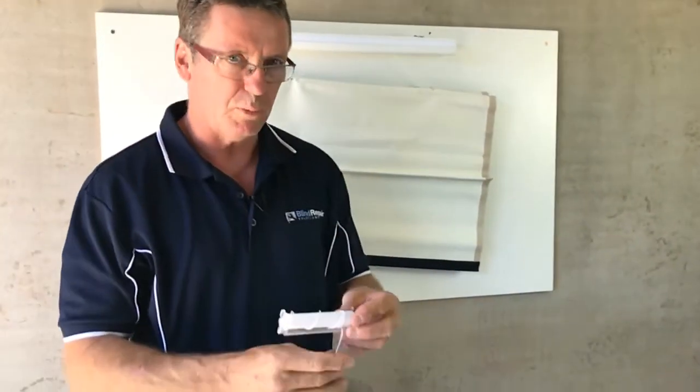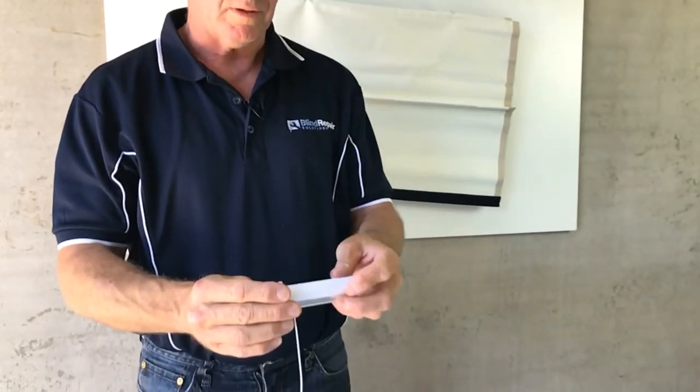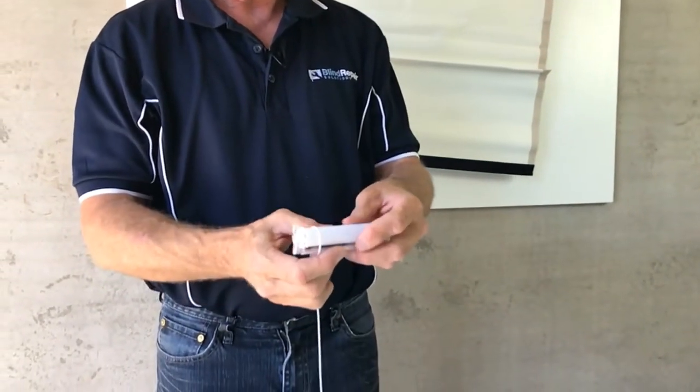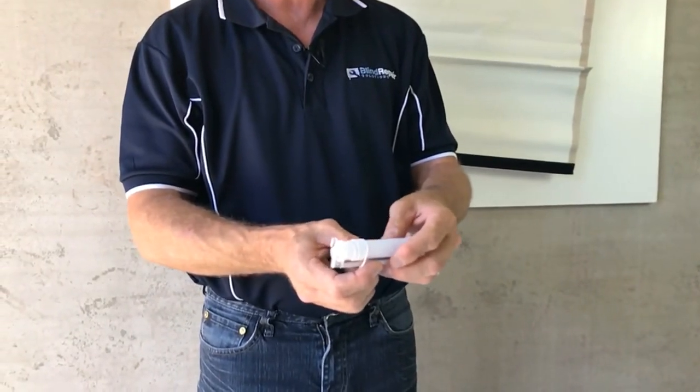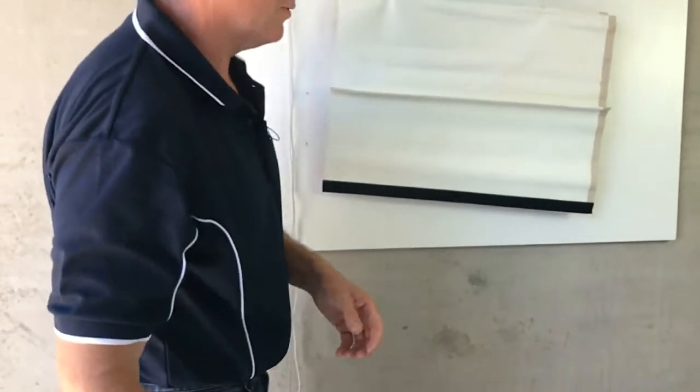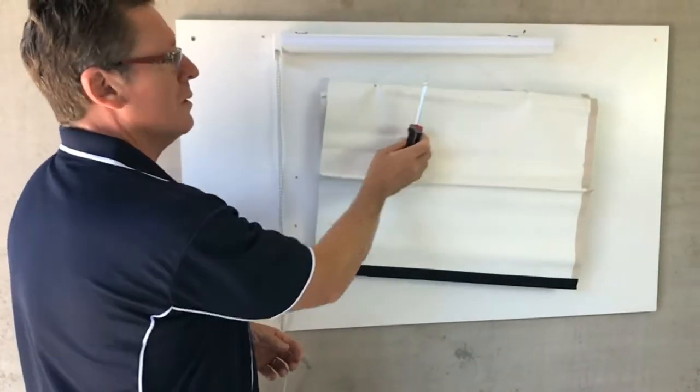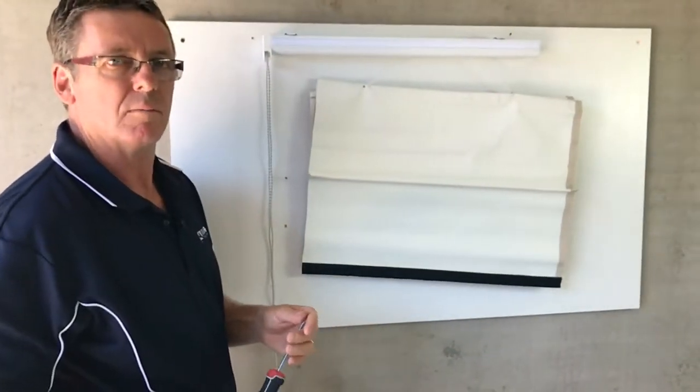This here is the spool. Basically what it does is as the bar pulls up, the cord rolls around the spool and rolls the blind up. And what happens is they sometimes become loose and can come off centre.